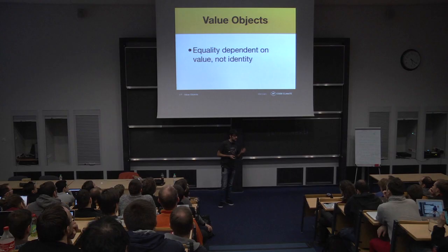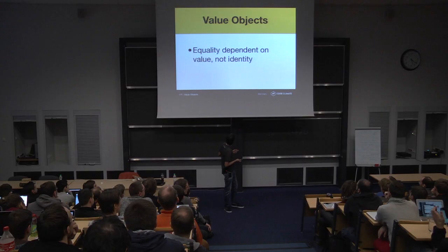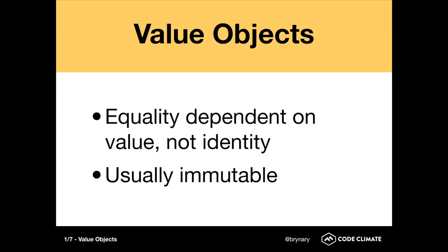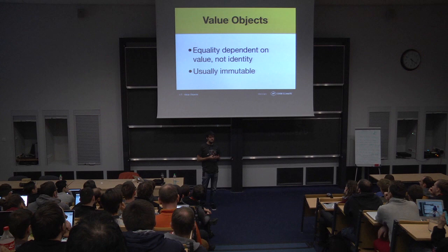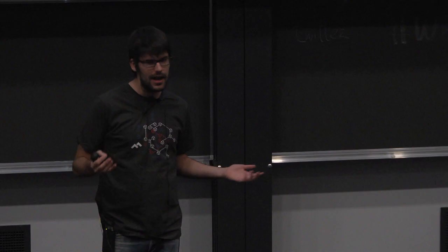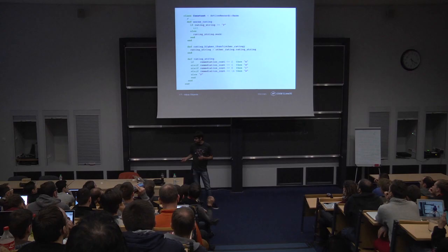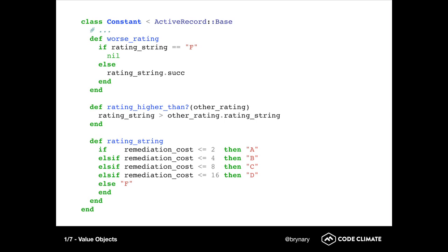The first pattern that I would recommend considering is value objects. So value objects are small encapsulated objects, I'm getting thumbs up for value objects, that are based, their quality is based on their value, not their identity, and they're generally but not always immutable. So in the Ruby standard library, examples would be pathname, URI, those are some more complex examples. The simplest ones are just things like fixnum.